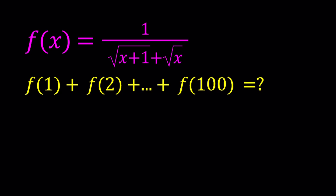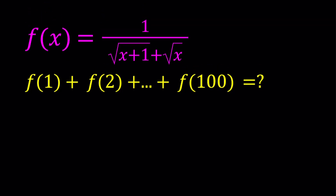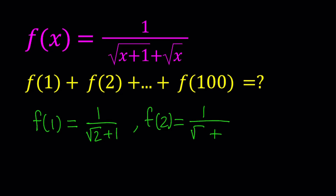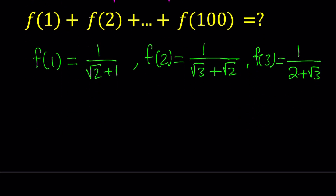Let's take a look at some of these values. For example, what is f of 1? You're going to replace x with 1 in the expression, and that's going to give you 1 over square root of 2 plus 1. If you evaluate f of 2, you replace x with 2 — that gives you 1 over square root of 3 plus square root of 2. And for f of 3, replacing x with 3 gives square root of 4, which is 2, plus square root of 3.